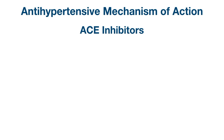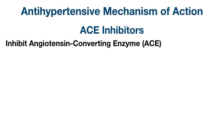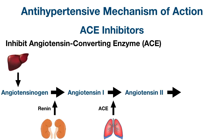Starting with ACE inhibitors, as the name suggests, they inhibit angiotensin converting enzyme, also known as ACE. Angiotensin converting enzyme is a part of the renin-angiotensin-aldosterone system. Specifically, it's involved in converting angiotensin 1 into angiotensin 2, which is the active hormone involved in increasing blood pressure through a number of mechanisms.